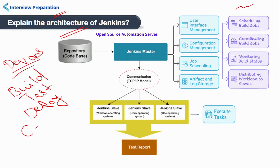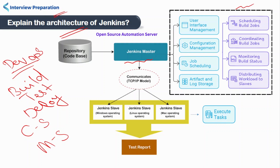It is also known as master-slave architecture. In Jenkins, the master node acts as a central point of control. It is responsible for managing the user interface, configuration, job scheduling, the build process, and distributing tasks to the slave nodes.